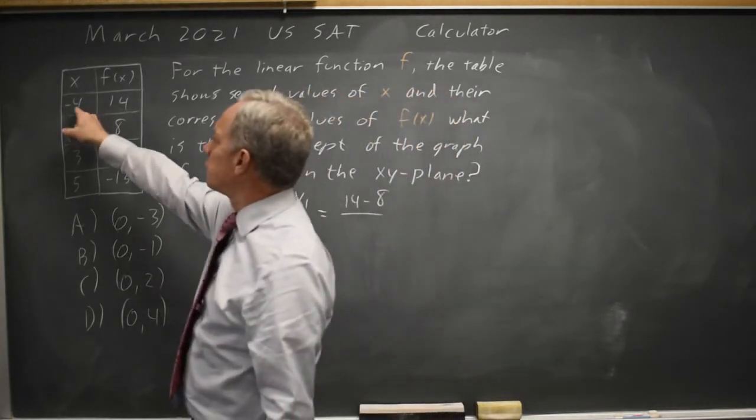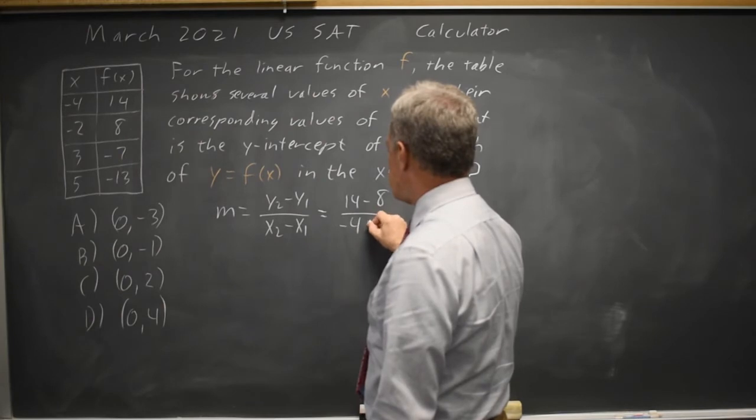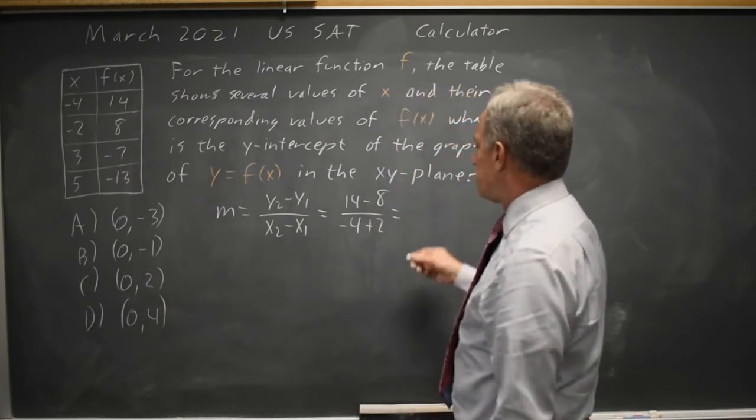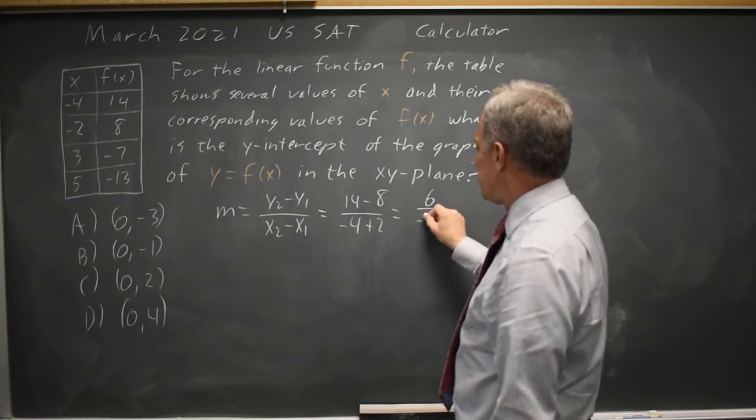Let's take these two so 14 minus 8 over the difference in the x coordinates taken in the same order, so that would be negative 4 minus negative 2. So negative 4 minus negative 2 is plus 2. And 14 minus 8 is 6, negative 4 plus 2 is negative 2, 6 over negative 2 is negative 3.